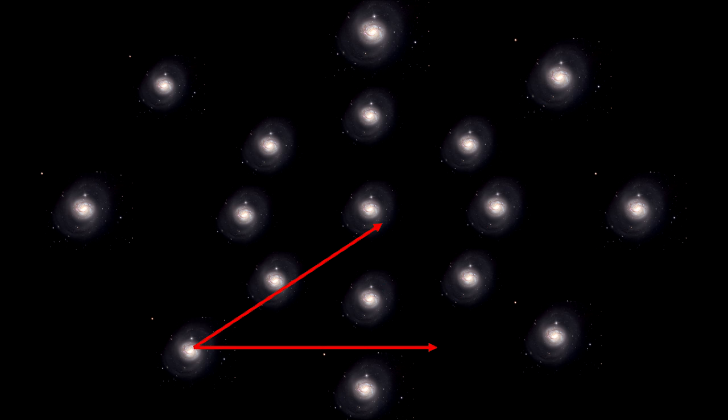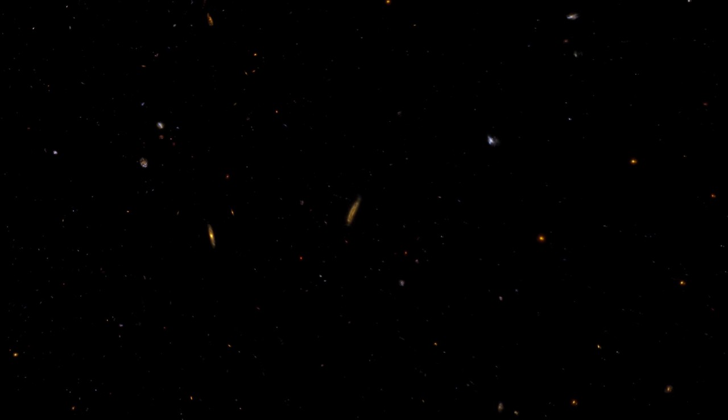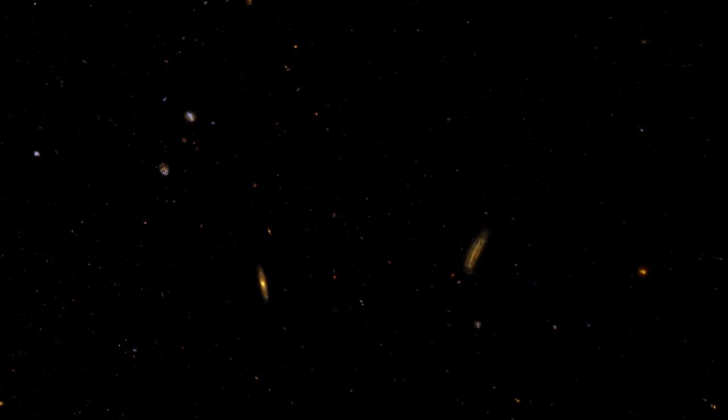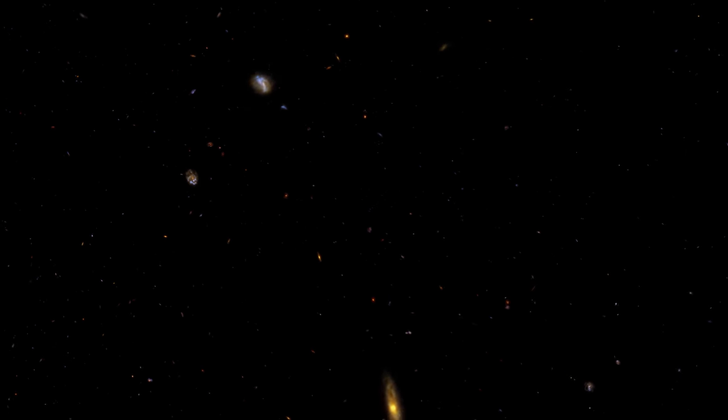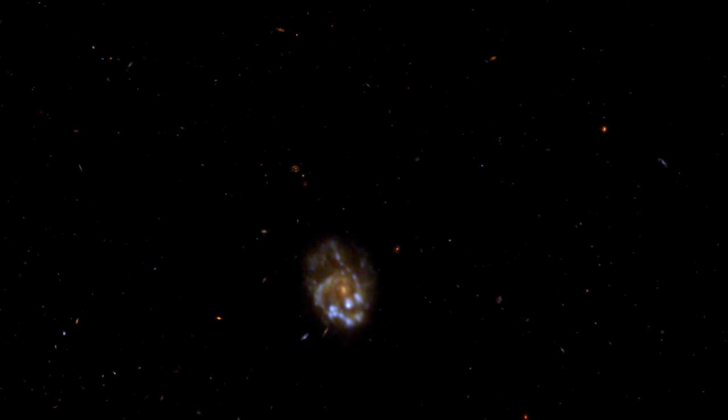Our assumption is that all observers will see the same isotropic distribution of galaxies. In other words, there is no preferred location in the universe — it's homogeneous. Galaxy densities are the same everywhere, as long as we are viewing large enough distances and volumes.